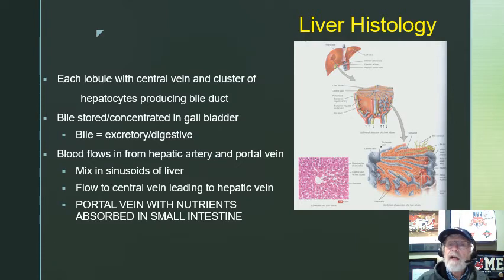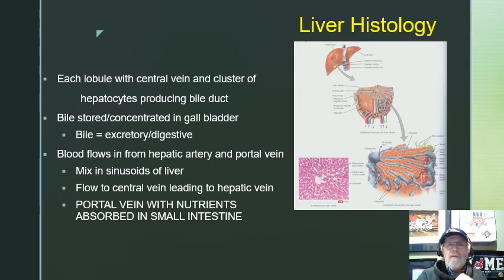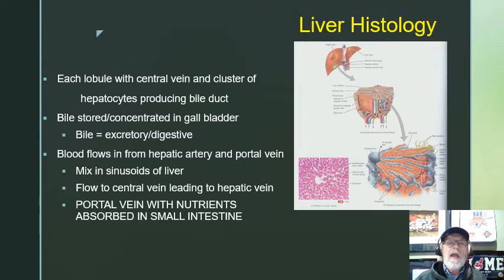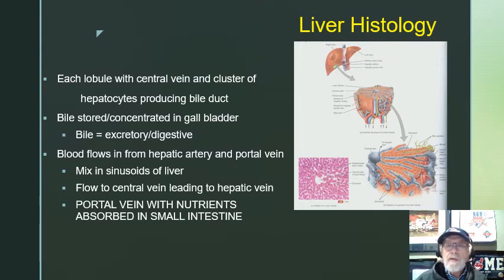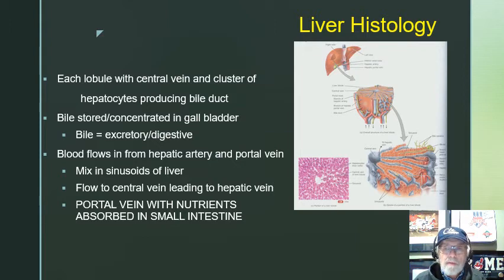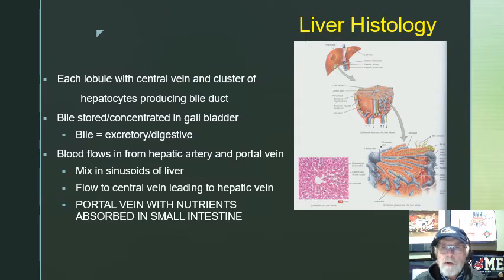Blood flows in from the hepatic artery and the portal vein and mixes — so now I have arterial blood mixing with portal vein blood: nutrients and oxygen. They go to the central vein and then out to the area of the inferior vena cava. That portal vein has all the nutrients absorbed in the small intestine — please remember that. If you know that, you know 95% more than most people in anatomy and physiology.